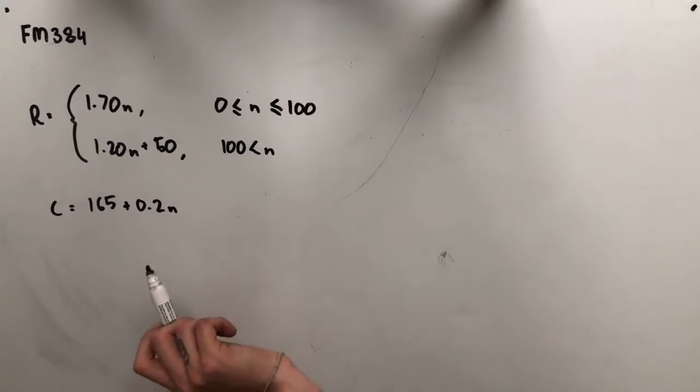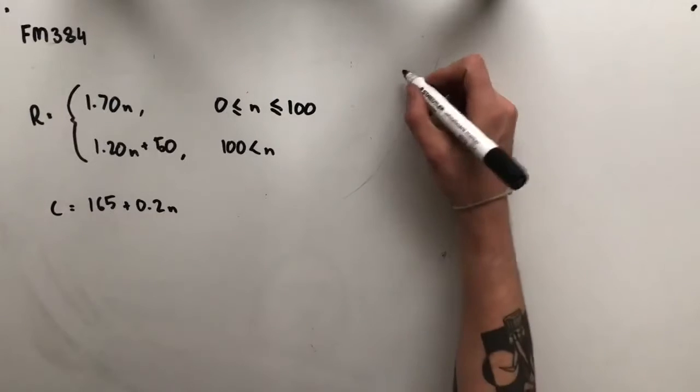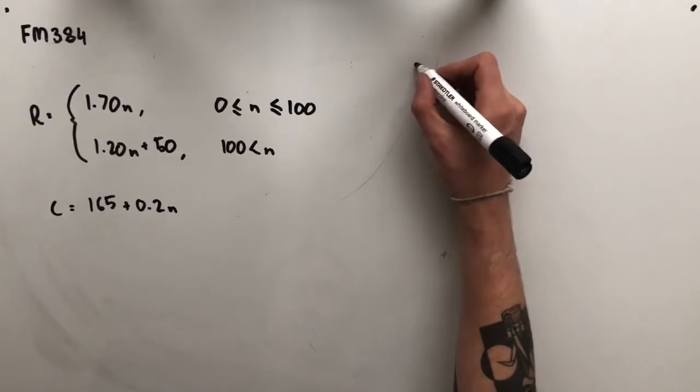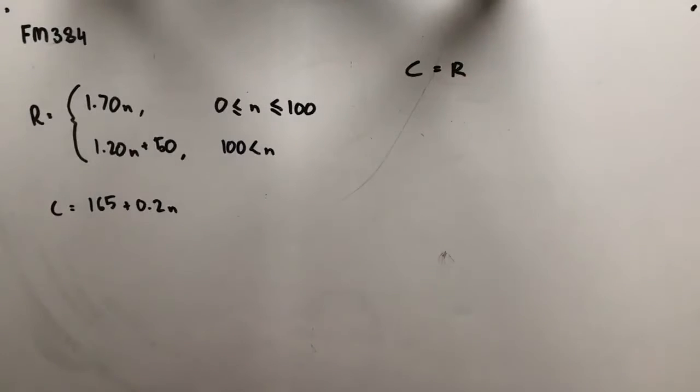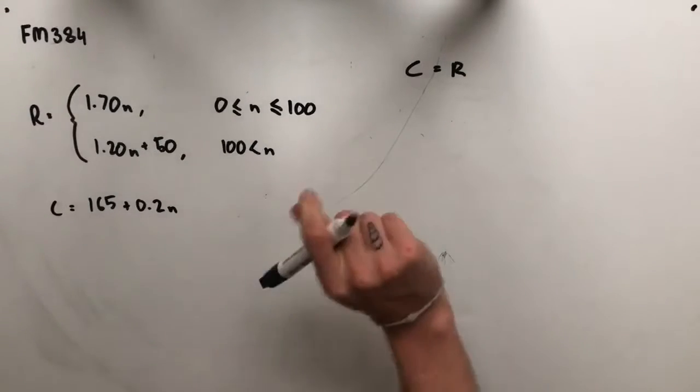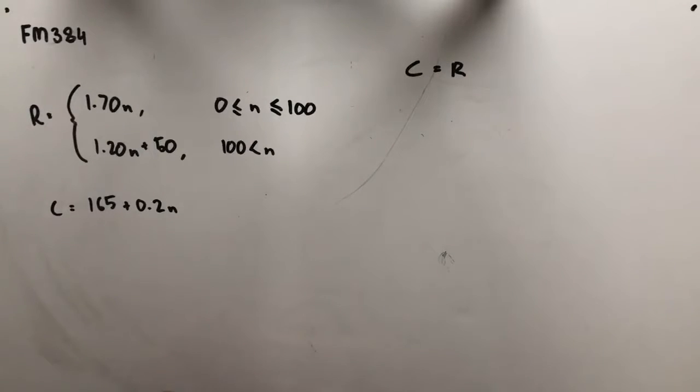To break even, the number of delicious cheese and Vegemite rolls that the bakery needs to sell each day is what? Now, we should know that the break even point is where our cost is equal to our revenue. In other words, there's no profit being made yet. It's the point right before where we would start seeing some profit.